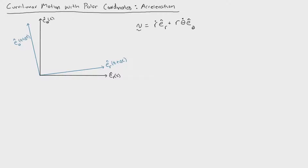To find the acceleration, all we have to do is take the time derivative of velocity. We're going to do the same thing as before — take the derivative, keeping in mind that the unit vectors are changing with time, so we can't ignore them. We're going to apply the product rule twice to find the acceleration vector.